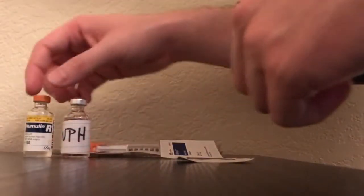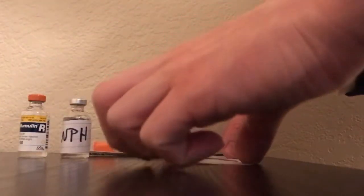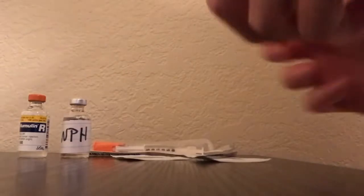How to mix insulin. Get your materials: your Humulin or clear vial, your NPH cloudy one, your insulin syringe, and two alcohol swabs. Verify the order with your MAR and the physician's order.